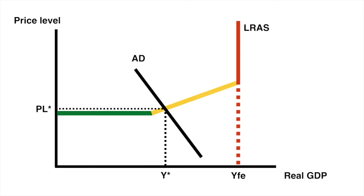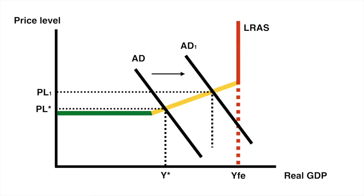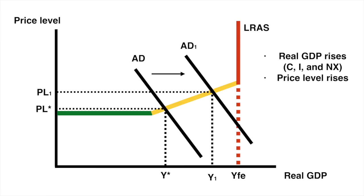Consider the following position of the economy: if real GDP is currently at Y* and the price level is at PL*, we are far away from our full employment level of output. The central bank could enact expansionary monetary policy by decreasing interest rates, increasing the money supply, weakening the international value of the currency, or a combination, with hopes of increasing AD to AD1. This in turn would increase real GDP to Y1 with an acceptable trade-off of the increasing price level from PL* to PL1. Real GDP rises, the price level rises, and unemployment falls.